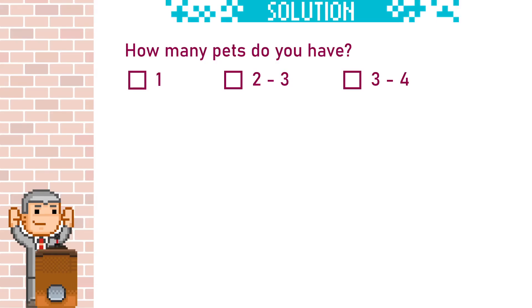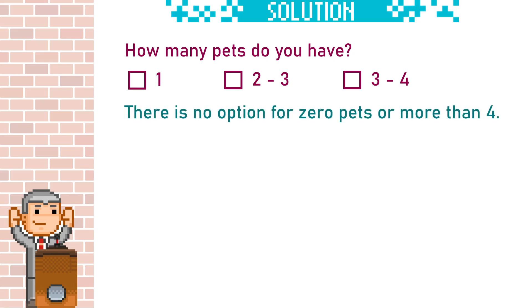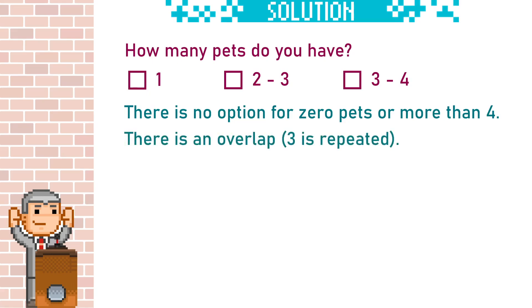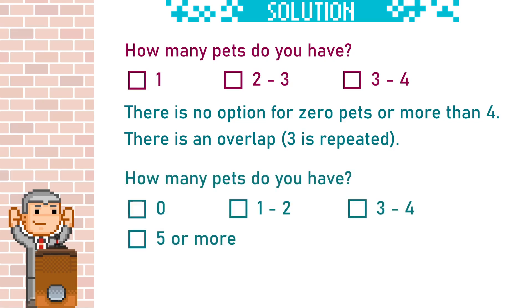Looking at this question — if you have no pets, which box do you tick? If you have three pets, do you tick the second or third box? Tick boxes must be exhaustive and contain no overlaps. There is no option for zero pets or more than four, and there is an overlap because three is repeated. So a better question includes zero, five or more, and avoids the overlap — so we have one to two and then three to four.